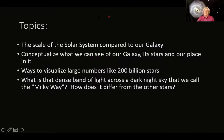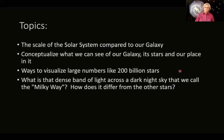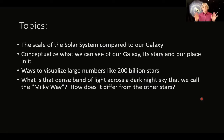We are going to be exploring big numbers — how far, how many — and make those numbers understandable. We're going to look at the scale of the solar system compared to our galaxy, actually get a picture in your head of what we can see of our galaxy, its stars, and our place in it. Ways to visualize large numbers like 200 billion stars and 200,000 light years, and what's with the dense band of light across the dark night sky that we call the Milky Way. Hopefully this session will help answer those questions.